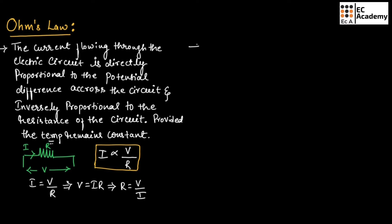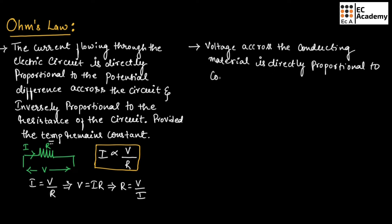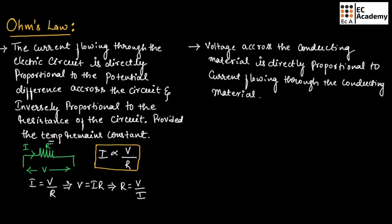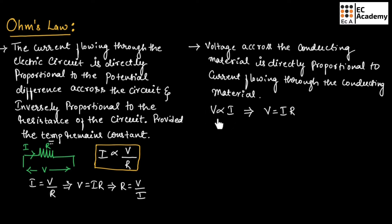Ohm's law can also be stated as the voltage across the conducting material is directly proportional to the current flowing through the conducting material, which means V is directly proportional to I. So from this, we can write V is equal to I into R.